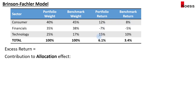The portfolio return is 6.1% and the benchmark return is 3.4%. If we calculate the excess return — the portfolio return minus the benchmark return — that would be 6.1% minus 3.4%, which equals 2.7%. We can attribute this to the allocation effect, the selection effect, and the interaction effect.